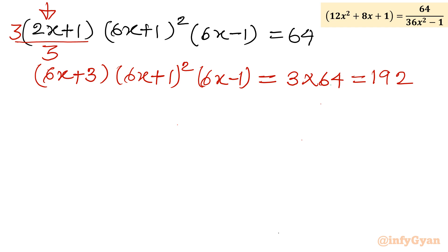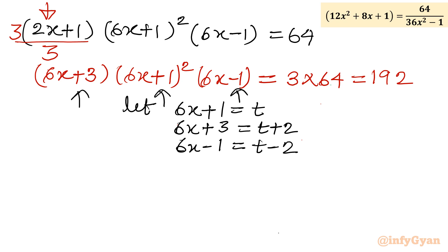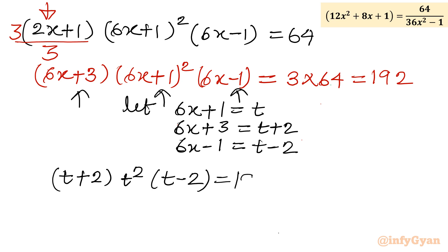Now I apply substitution. Let T = 6x + 1. Then 6x + 3 = T + 2, and 6x − 1 = T − 2. Substituting into the equation: (T + 2) · T² · (T − 2) = 192.